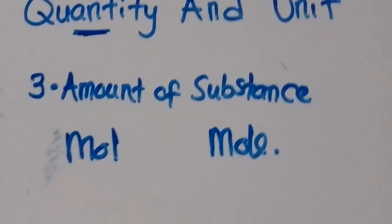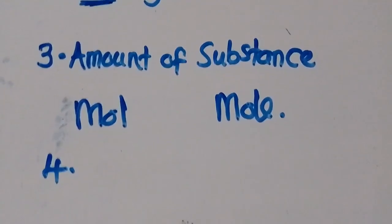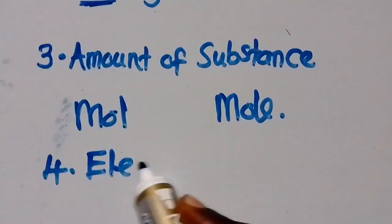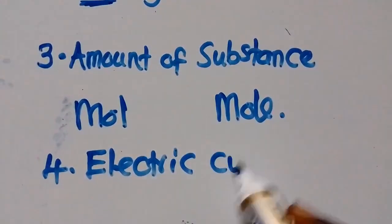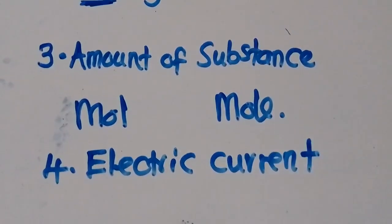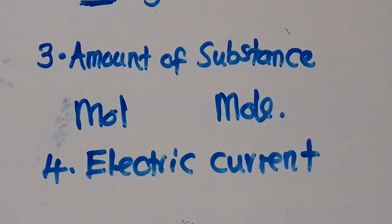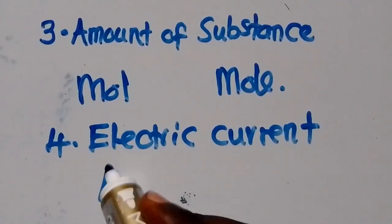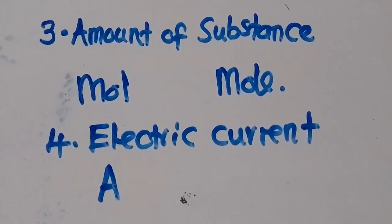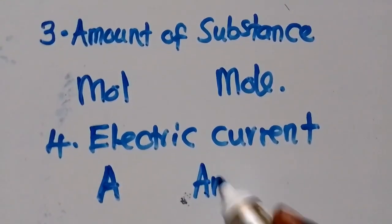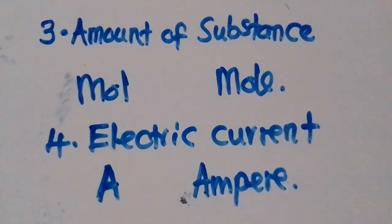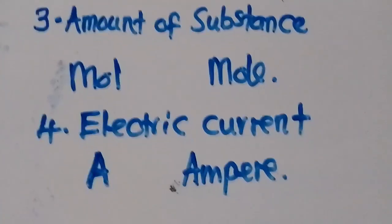We move to number four. The fourth basic quantity is electric current. Electric current is measured in amps or amperes. The symbol is capital 'A' and in words it is ampere. This is how you need to write it. Make sure you are able to write all these things down in your book.